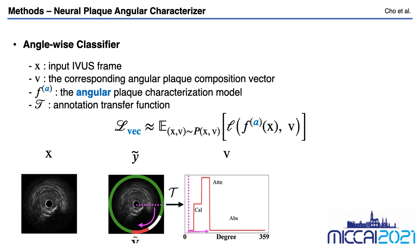Suppose we have an angular plaque composition vector dataset. Then we can define the angular plaque characterization model Fa, which directly infers an angular plaque composition vector from an input IVUS frame. Precisely, cardiologists roughly make annotation images corresponding to the IVUS frame by drawing arc lines rather than a complete plaque composition map. These annotation images are converted to V via transfer function T. We emphasize that labeling the approximate annotation is easier and more efficient than labeling a full composition map Y to derive V.